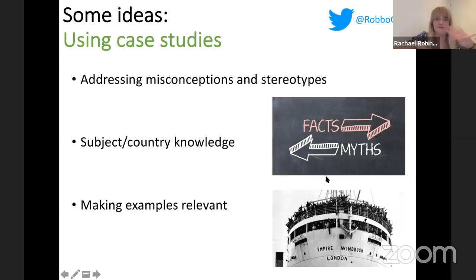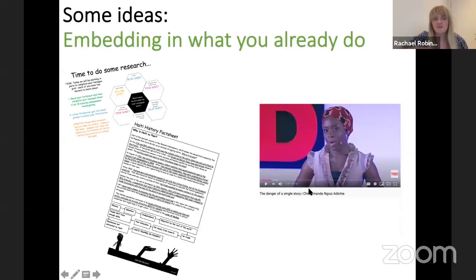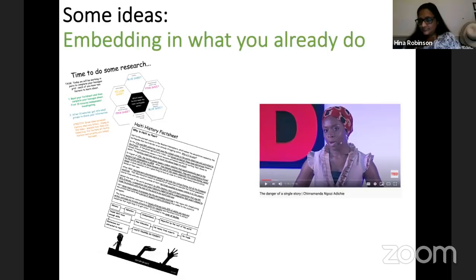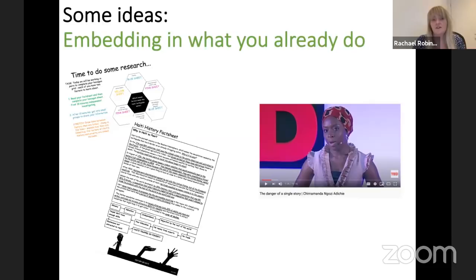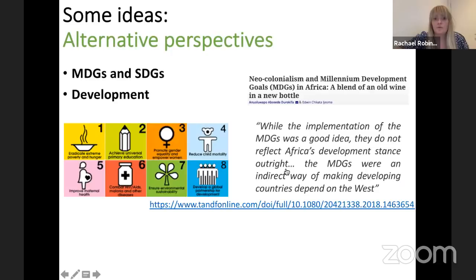As geography teachers, we must update our subject knowledge, ensure we're not just teaching whole-country information but teaching about specific areas, making sure students know that within countries urban areas differ from rural areas — water security doesn't apply to a whole country, it's specific to parts. We need to make students globally aware. This needs to be embedded in what we already do — not bolt-on. A classic example: when teaching the Haiti earthquake, we go into detail about why Haiti is in poverty, discussing the only successful slave rebellion in history, which led to trade embargoes with a lasting legacy.